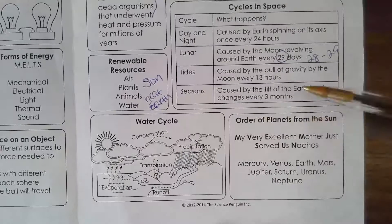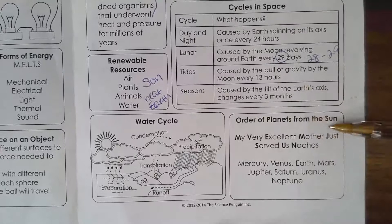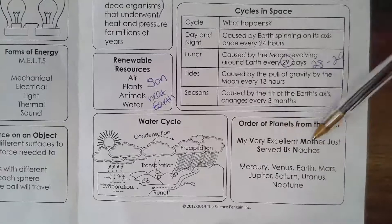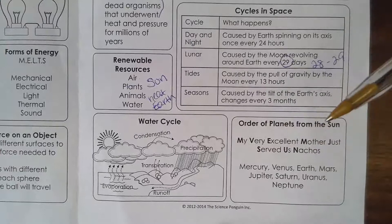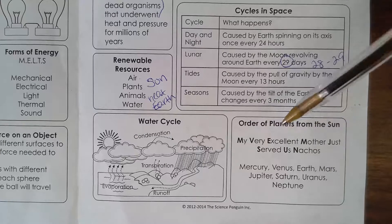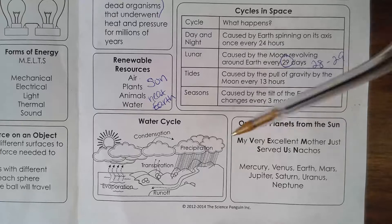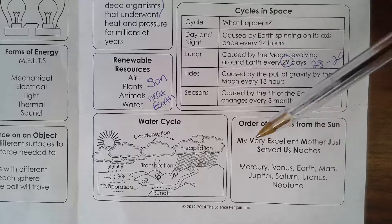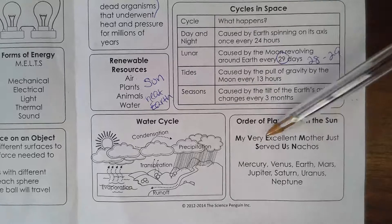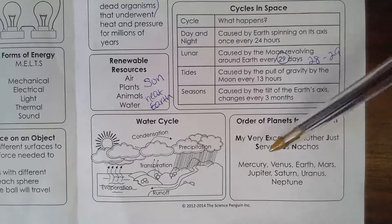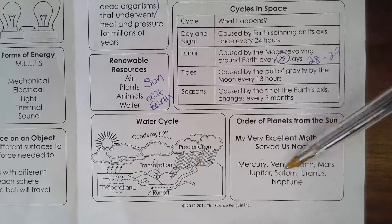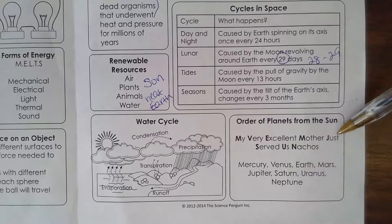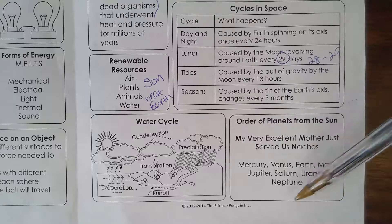Order of planets from the sun — this is important. My Very Excellent Mother Just Served Us Nachos: Mercury, Venus, Earth, Mars, Jupiter, Saturn, Uranus, Neptune.